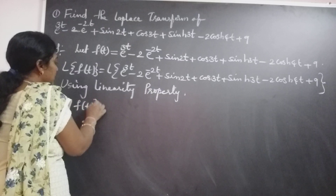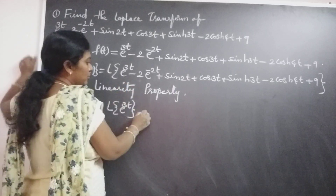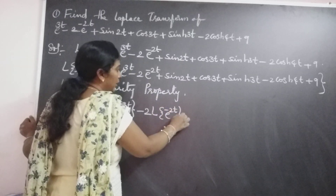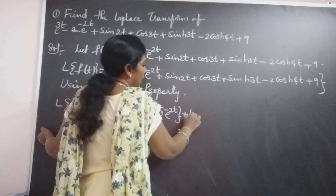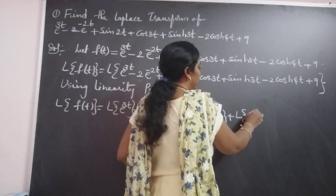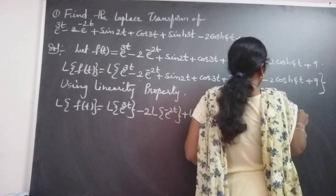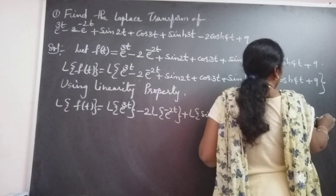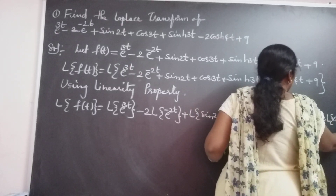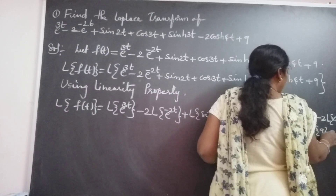Using the linearity property, L of f of t is equal to L of e power 3t, minus 2 outside — because it is a constant — times L of e power minus 2t, plus L of sin 2t, plus L of cos 3t, plus L of sinh 3t, minus 2 times L of cosh 4t, plus 9 times L of 1.